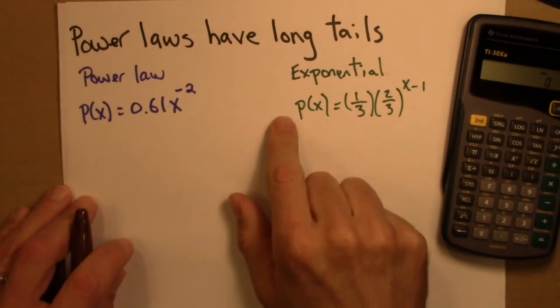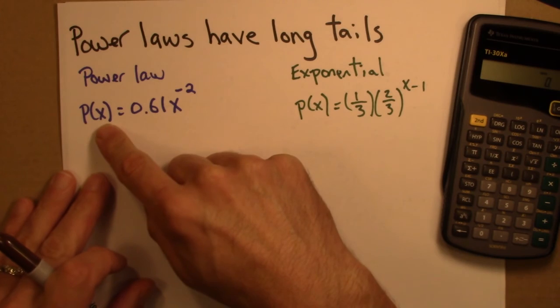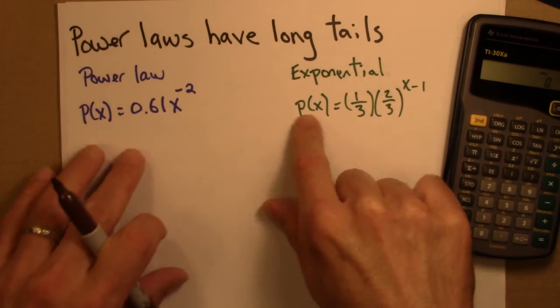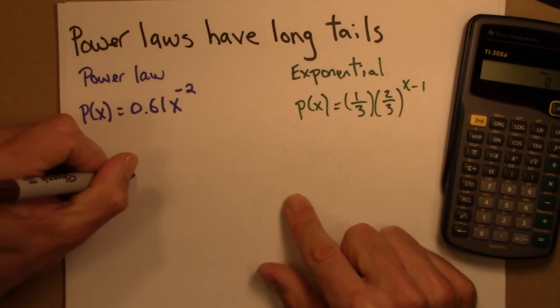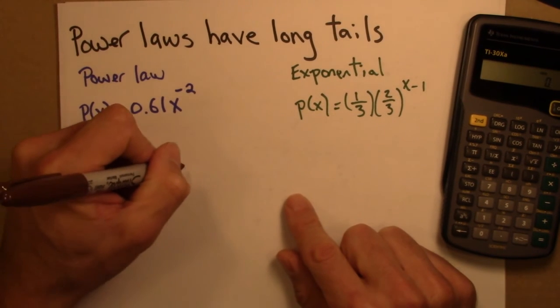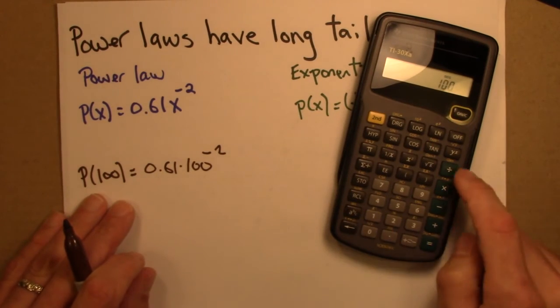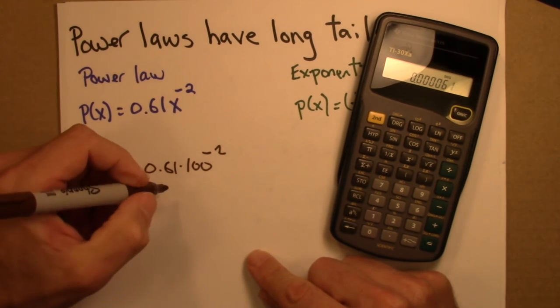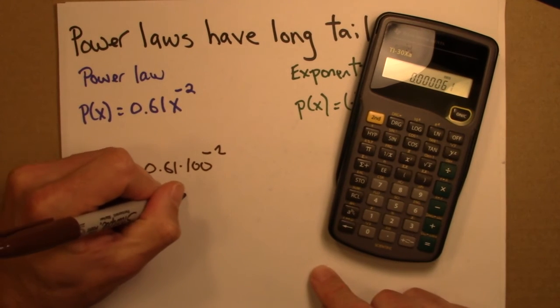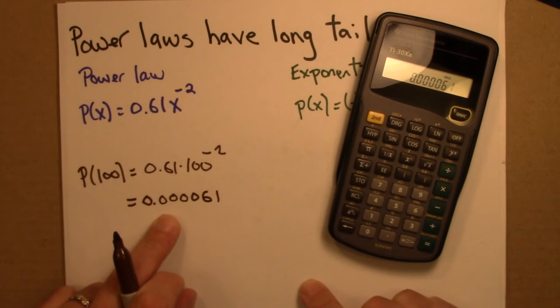So let's see this long tail behavior numerically. I'll just do one quick example. So suppose we're interested in P(100), the probability that we get x of 100 for whatever x might be. So first for the power law, I'll just plug in. It's 0.61 times 100 to the minus 2. So let's see, 100 to the minus 2. Then I need to multiply that by 0.61. And that is 0.000061.